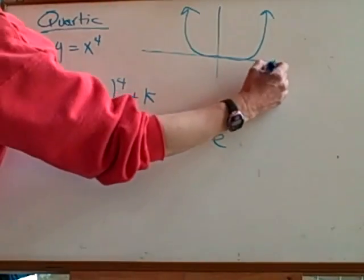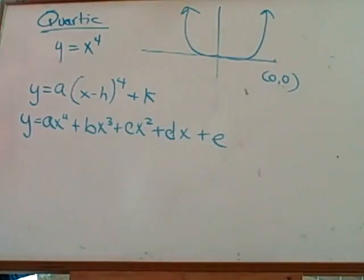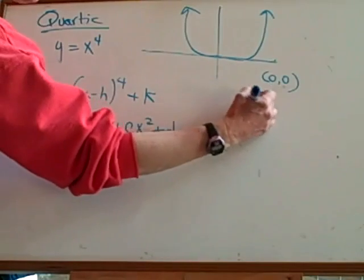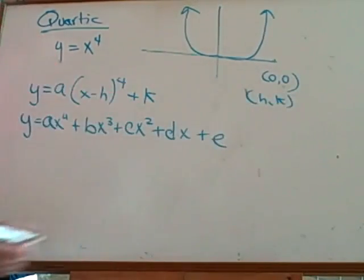Up at the top, underneath the graph, it says locator points. One of your locator points is at zero, zero. That's if you just have the parent function. If you have the one that has a vertex at h, k, then of course your locator point would be at h, k. All right, thank you.